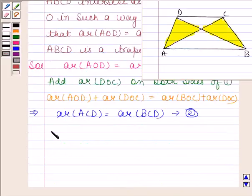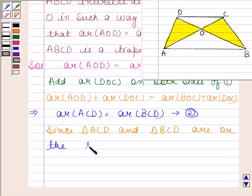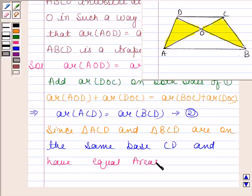Now, since triangle ACD and triangle BCD are on the same base and have equal areas, therefore...